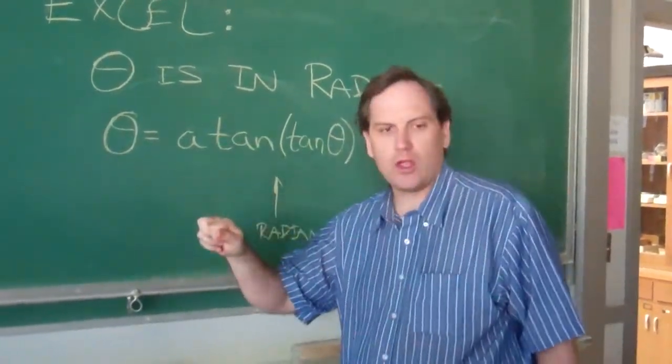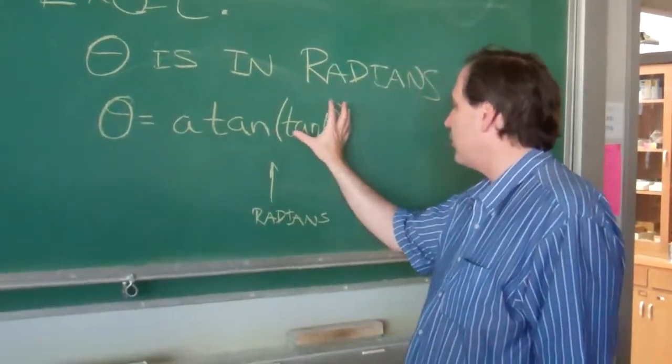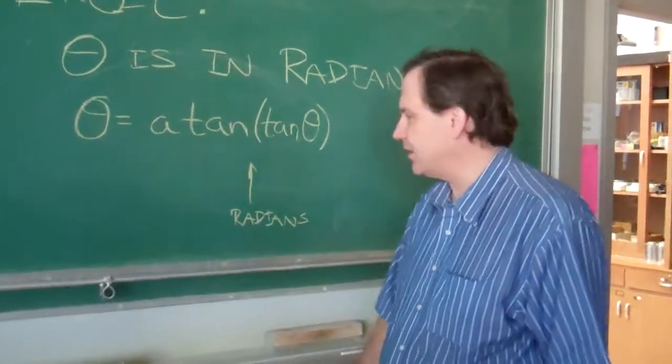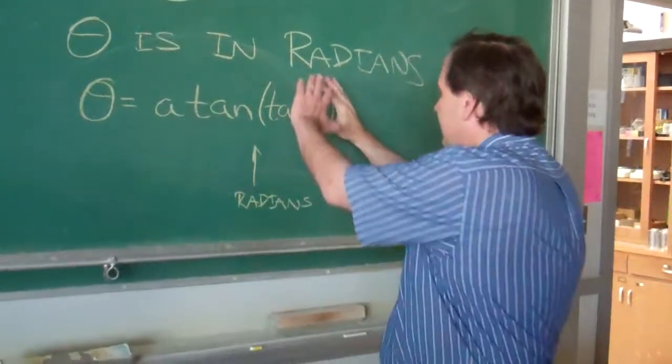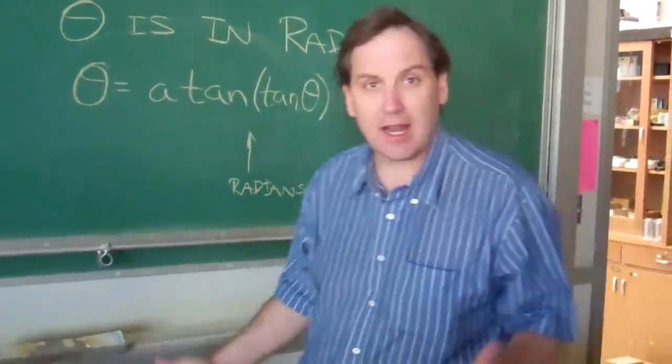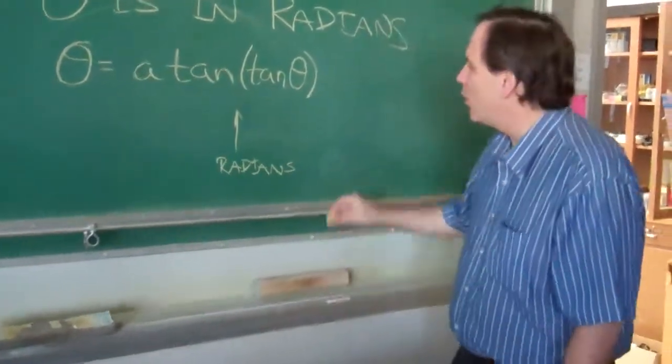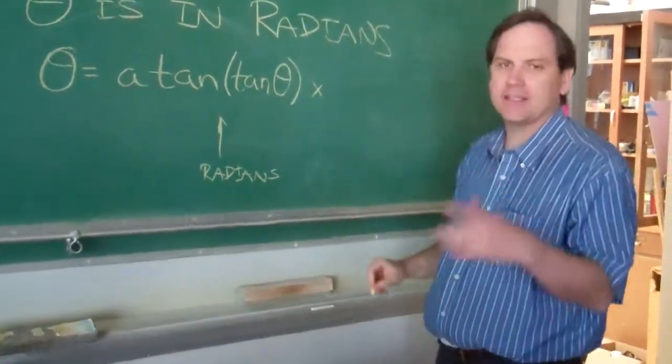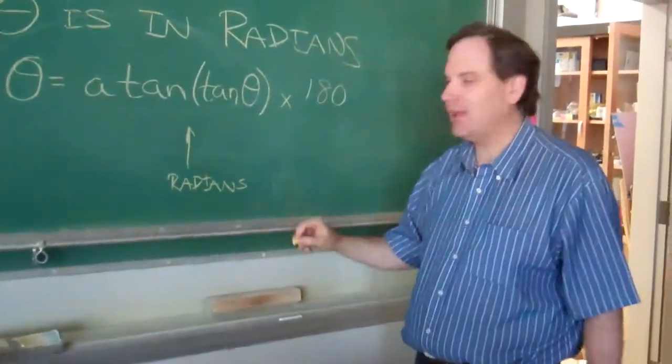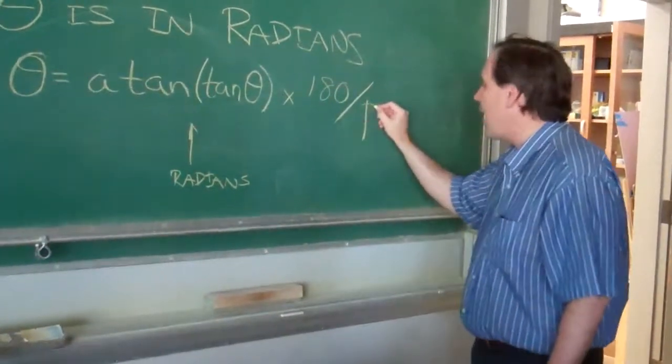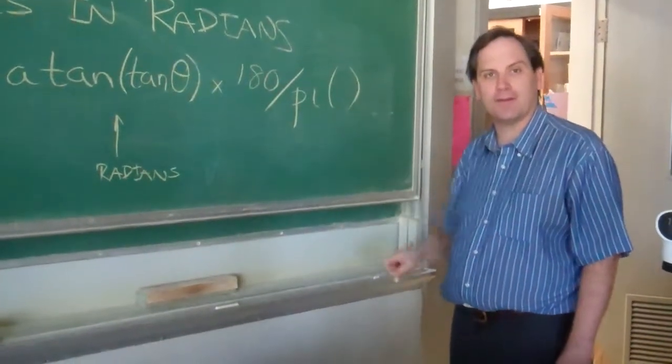So you have to be able to translate between them. So for example, when we have the tangent of theta, we calculated what that is. That's this number here, one of the cells. We say theta is equal to atan, that's arctangent, of tangent of theta. That should give us theta. And it will, but it gives it in radians. So how do we do this?